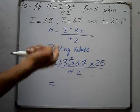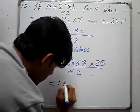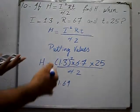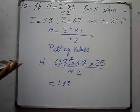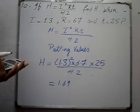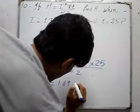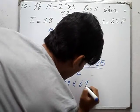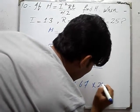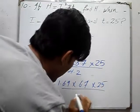1.69. So 1.3 squared is 1.69. Now multiply this by 6.7, then by 25, with 4.2 in the denominator.